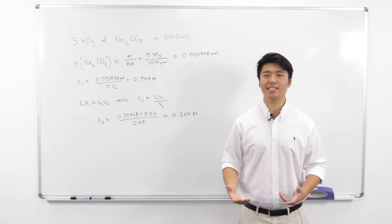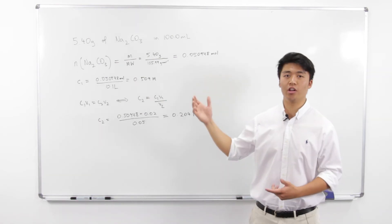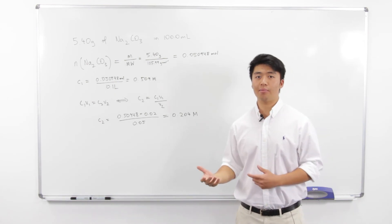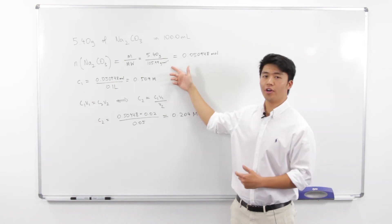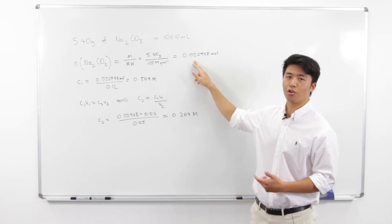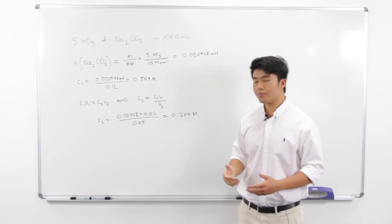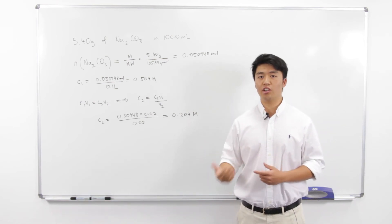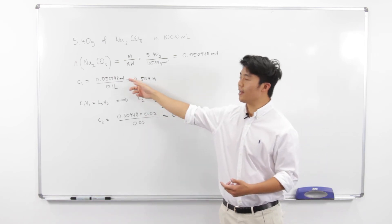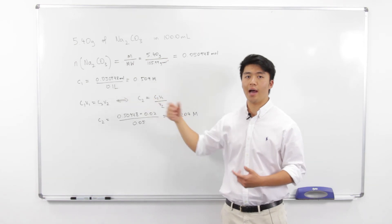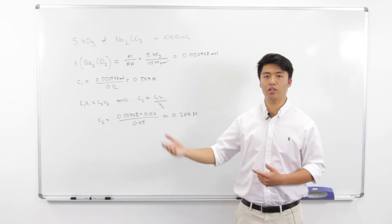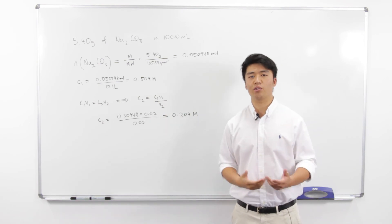So this question is pretty clearly set out so we can work through it chronologically. First of all, we'll calculate how many moles of sodium carbonate we have using 5.4 grams over the molecular weight of sodium carbonate, and that gives us 0.050948 moles. Now to calculate the concentration in the 100 ml flask, we'll use C equals N over V, where N is the moles and V is our 100 ml volumetric flask, and that gives us 0.509 molar concentration. So that's the first part of the question done.